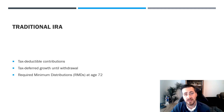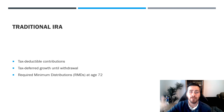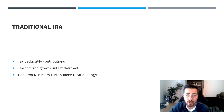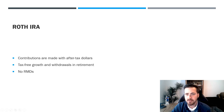There are required minimum distributions — you're required to take money out at age 72. So if you decide you never want to spend it and let it grow, at 72 you have to take it out. The amount you have to take out gets more and more every year. At 72, right now it's about 3.65%, and it goes up slowly every year.